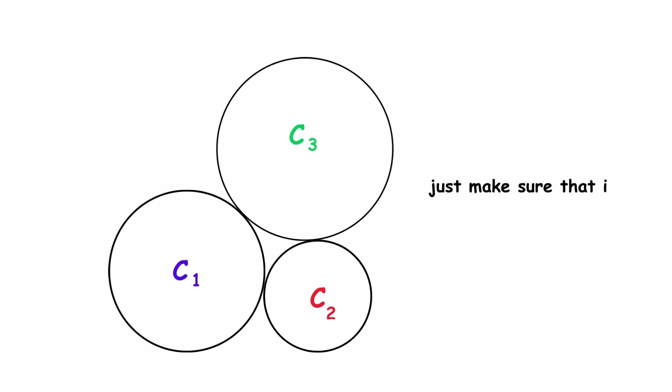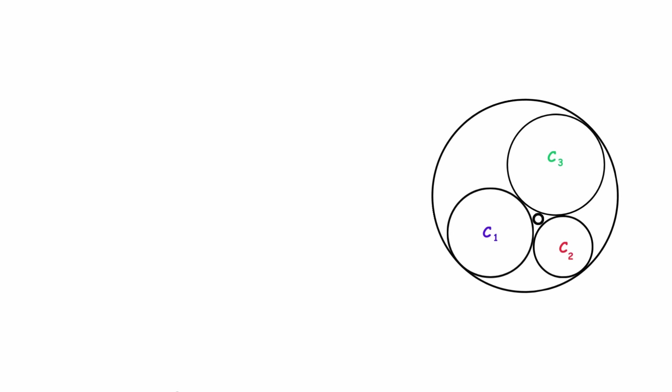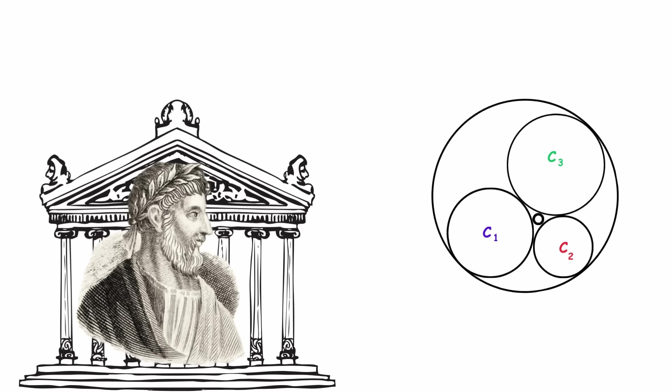Just make sure that it's not tangent at the same point where C1 and C2 are tangent to each other. Now that we have these three circles, we can always draw exactly two more circles that are tangent to all of the first three circles. This was discovered by the ancient Greek mathematician Apollonius of Perga, who lived from 240 BC to 190 BC.